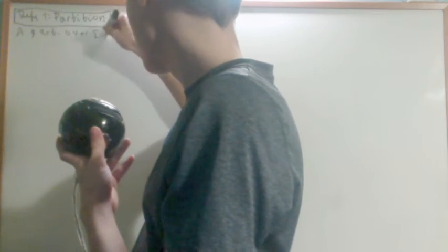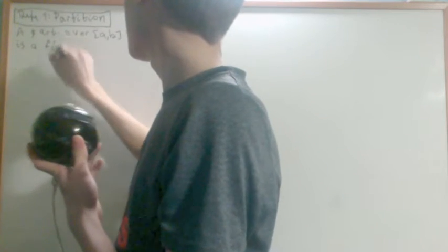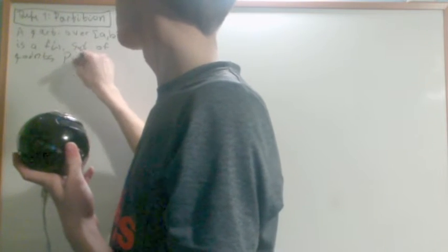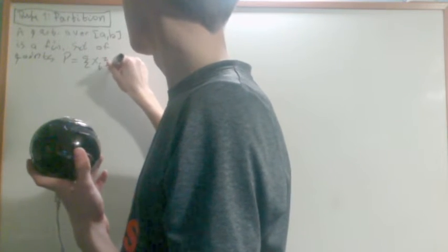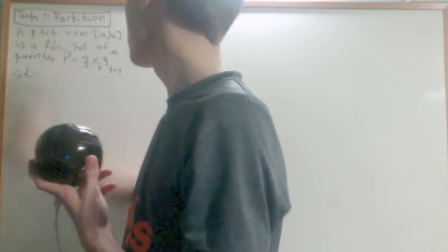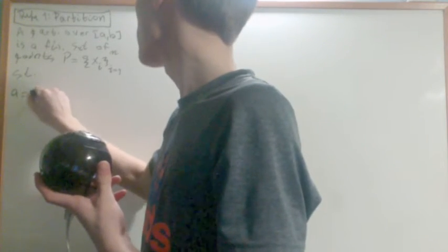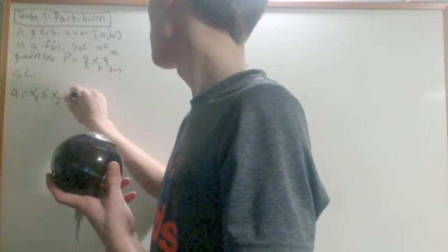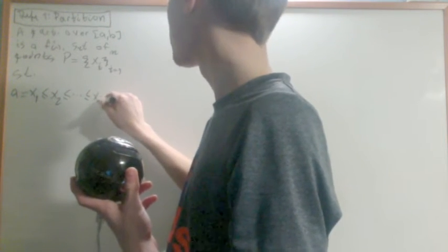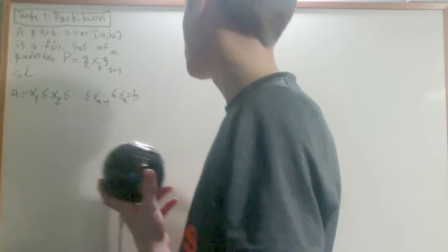So let's start off with the definition of what's called a partition. We say that a partition over the interval from a to b is a finite set of points, p, which is actually going to be a sequence from i equals 1 to n, such that a is going to be equal to x1, less than or equal to x2, all the way up until xn minus 1 less than or equal to xn, which is equal to b.